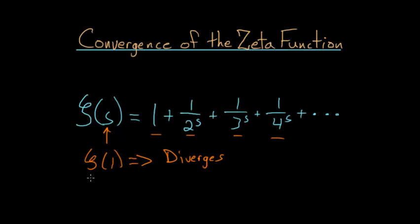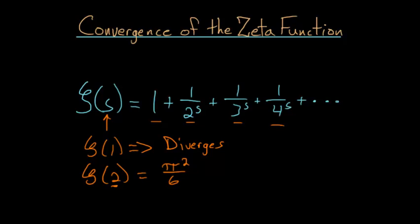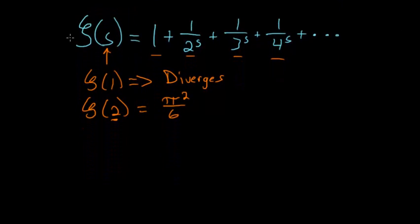We also know that the zeta function evaluated at 2 is equal to pi squared divided by 6, so it converges for the value s = 2. And the way to figure out for which values of s the function converges, we can write the zeta function in a slightly different way.